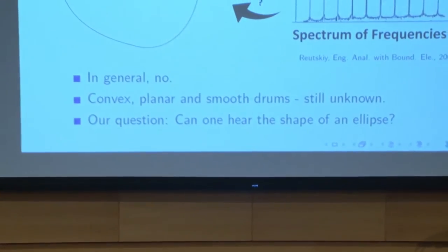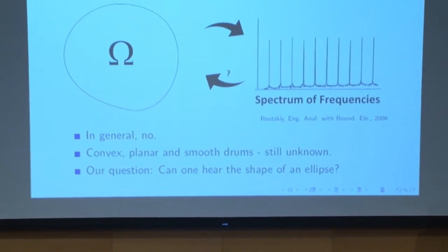But Kac's question is still unknown if we restrict our drum to specific types. So what we'll be considering is, what if we consider drums that are convex, two-dimensional or planar, and have a smooth boundary? And this is kind of like what an actual drum would look like. It turns out the answer to this question is still unknown in this domain. One thing that is known is that the circle, for example, you can't hear the shape of a circle if you restrict our drum to this domain. So building off of that result, the question that we'll be asking is, can one hear the shape of an ellipse? And an ellipse, it sort of serves as a natural generalization of our circle and is a very natural question to ask.